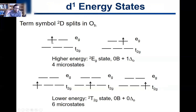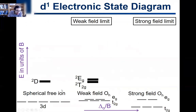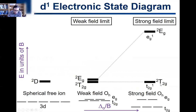There are four microstates for the doublet EG — spin up and spin down in each EG orbital. The six lower energy microstates correspond to one electron in the T2G orbitals — spin up and spin down across the three T2G. We call this the doublet T2G, because it has the same symmetry as the T2G molecular orbitals. Its energy is 0B with no delta O term because it is the ground state.